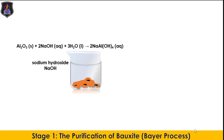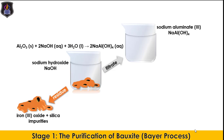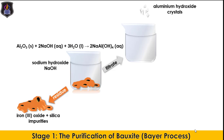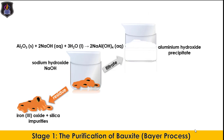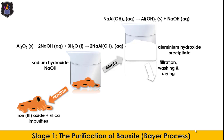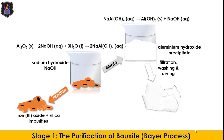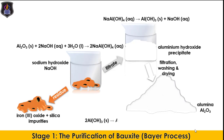The mixture is filtered to obtain a solution of sodium aluminate as the filtrate. A few crystals of pure Aluminium hydroxide are added to the filtrate to precipitate Aluminium hydroxide according to the equation on the screen. The Aluminium hydroxide is then filtered, washed, and dried to obtain pure Aluminium hydroxide crystals, which are heated strongly to obtain pure alumina, as shown in the equation of reaction.